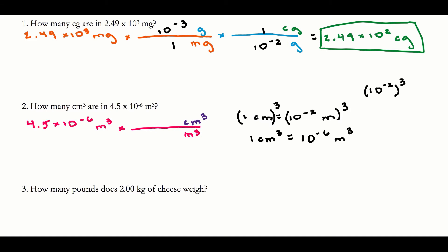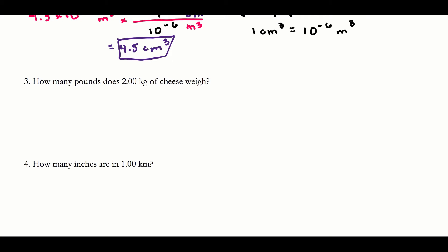Plugging in: one centimeter cubed equals 10 to the negative 6 meters cubed. My final answer: I take 4.5 times 10 to the negative 6 and divide by 10 to the negative 6 — those cancel — leaving just 4.5 centimeters cubed. Double-checking: 4.5 has 2 sig figs, 4.5 has 2 sig figs, and units are centimeters cubed. I'm good to go.